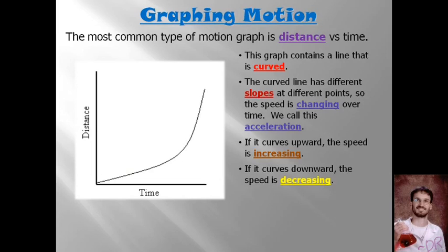If you're speeding up, the line would curve up. If the line was curving down, you would be slowing down. The last and second part of the acceleration definition is, if an object is changing direction, it is also accelerating.